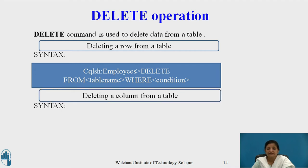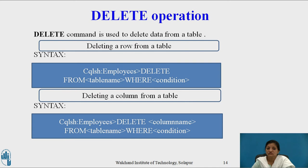The next type is deleting a column from the table. The syntax is: DELETE column_name FROM table_name WHERE condition, where one or more column names are specified, and WHERE is used to select the particular rows from which those columns are deleted.